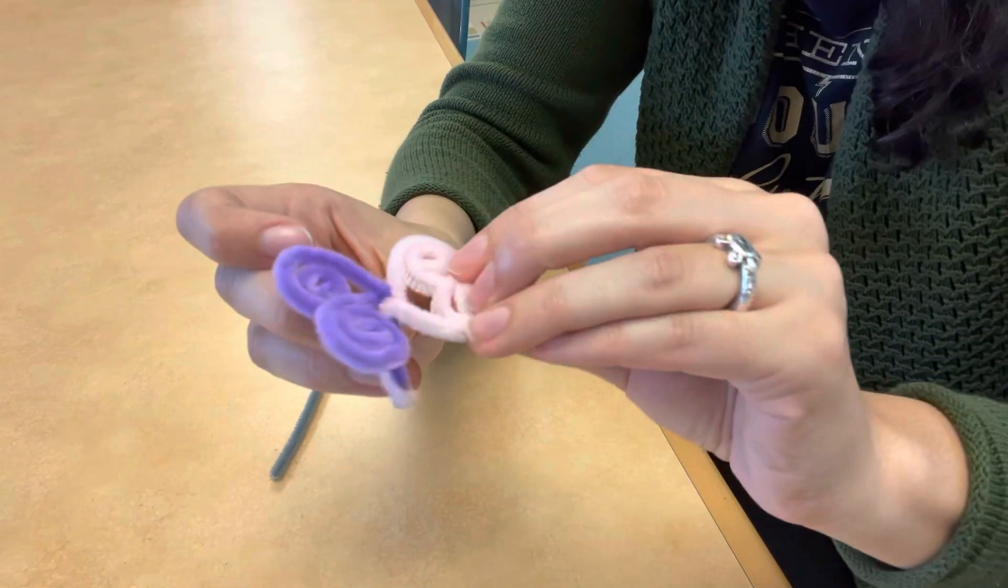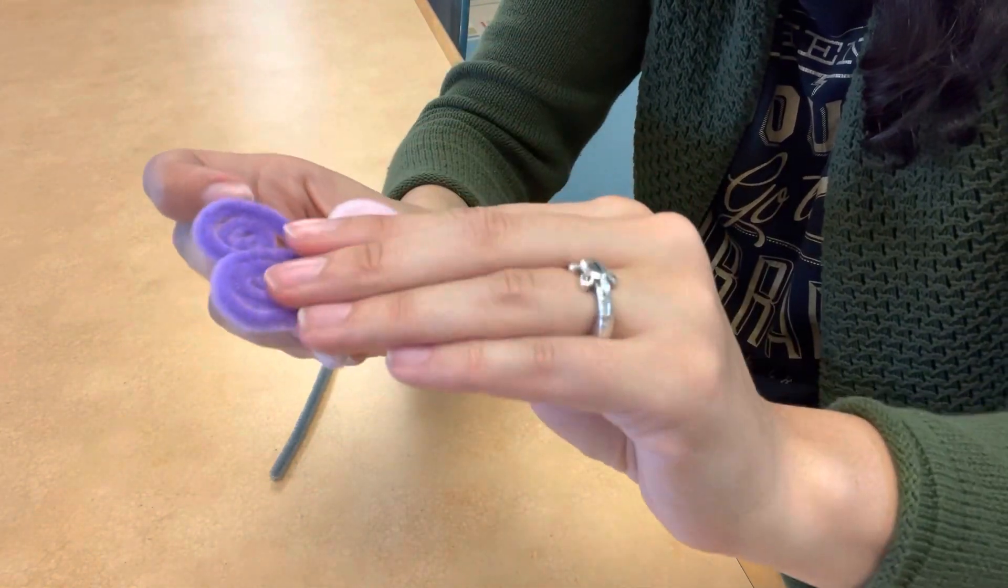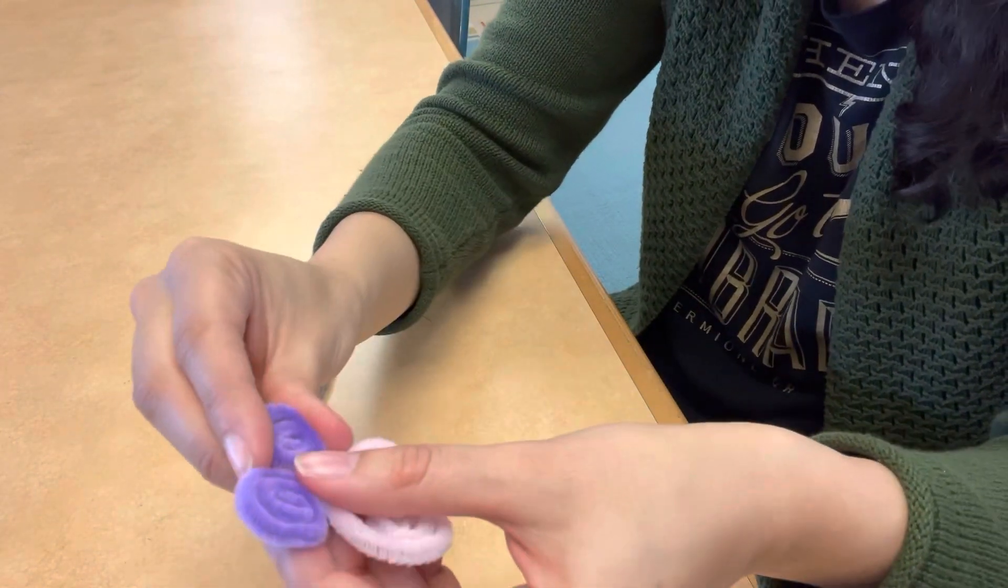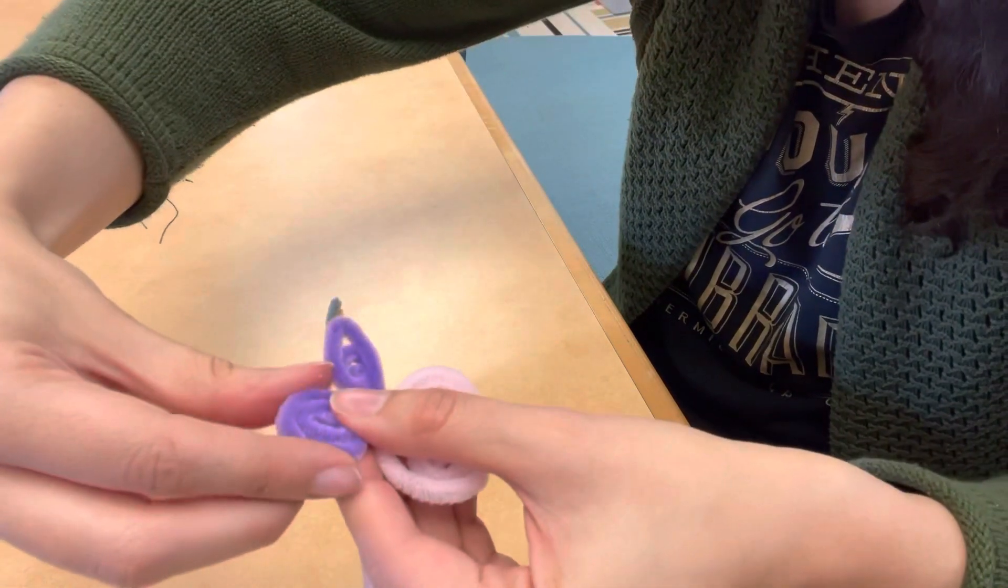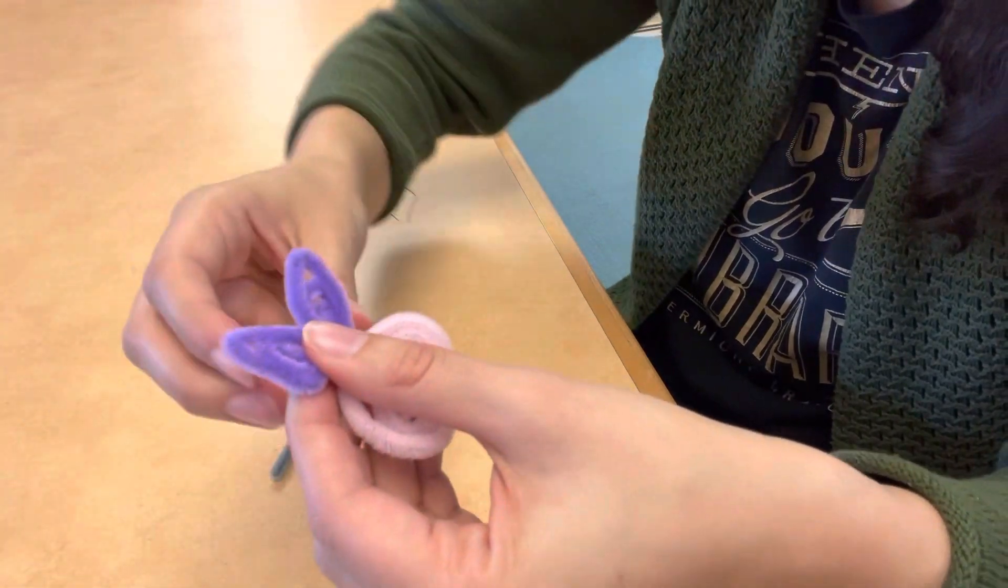When you're done rolling up all the edges towards the middle, then you're going to give a little pinch on the sides. This is to help shape the wings.